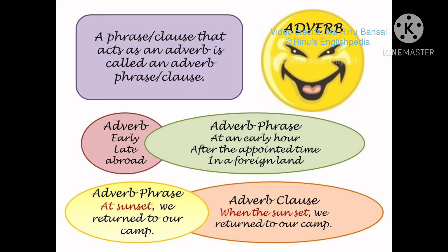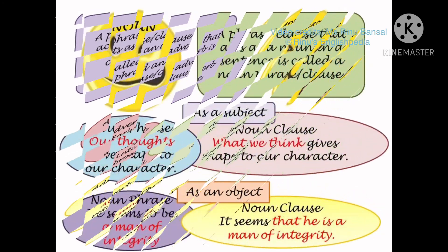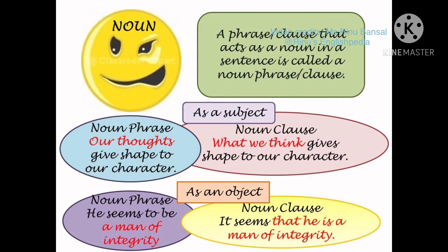The second type is the adverb phrase or clause, which acts as an adverb and modifies the verb — telling us how something is done. Single adverbs can expand into phrases: early becomes at an early hour, late becomes after the appointed time, abroad becomes in a foreign land. These adverbial phrases can further become adverbial clauses — for example, at sunset we returned to camp becomes when the sun set we returned to camp.